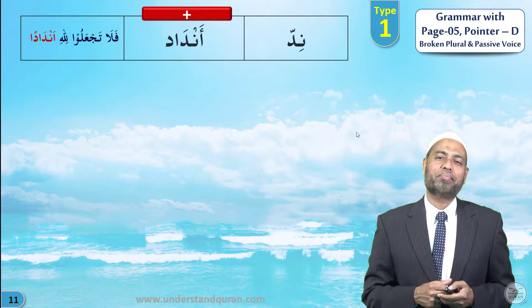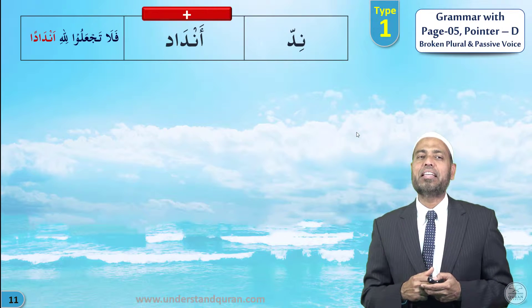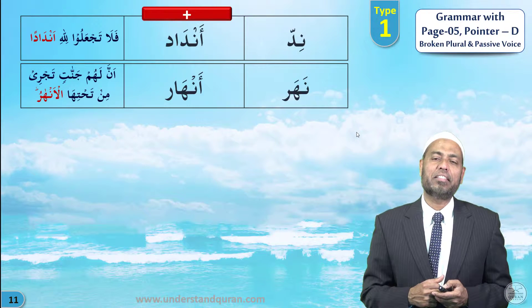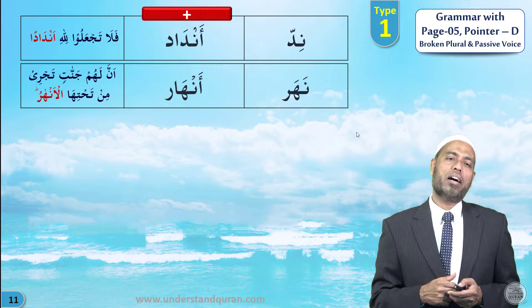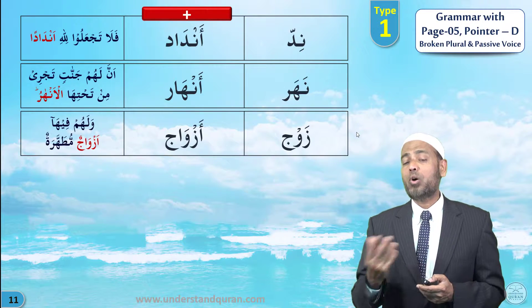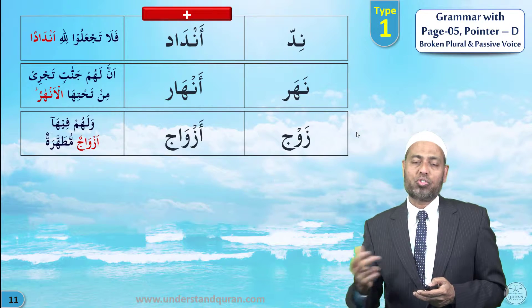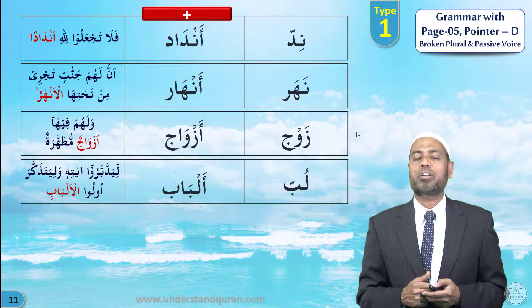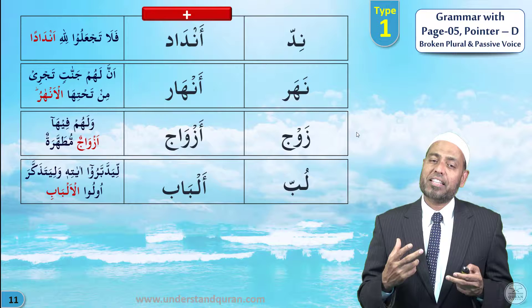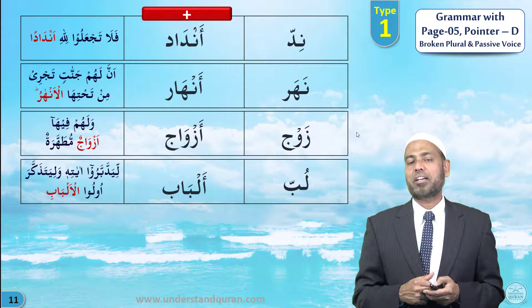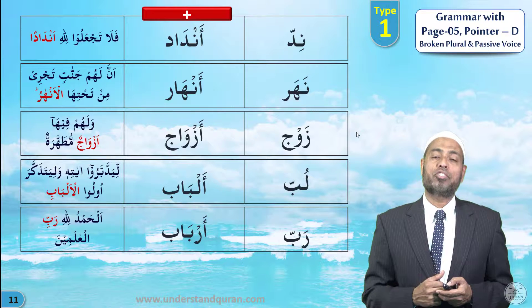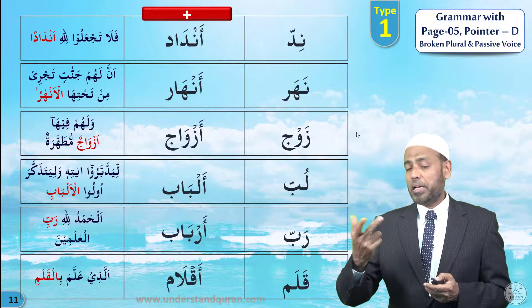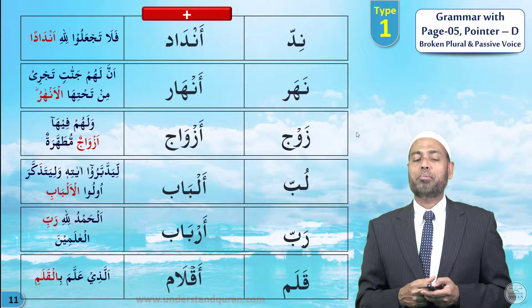Let us take more words on the same pattern. Nidd means equal; plural is andad — fala taj'alu lillahi andadan. Nahar means river; plural is anhar — jannatin tajri min tahtihal anhar. Zawj means partner or spouse; plural is azwaj — walahum fiha azwajun mutahhara. Lub means intellect; plural is albab — waliyatadhakkara ulul albab. Rab means lord, cherisher, sustainer; plural is arbab. Qalam means pen — alladhi allama bil-qalam; plural is aqlam.